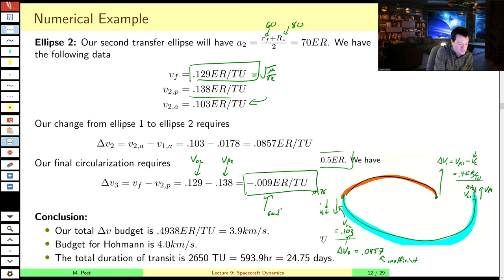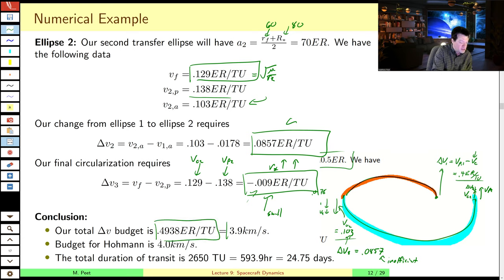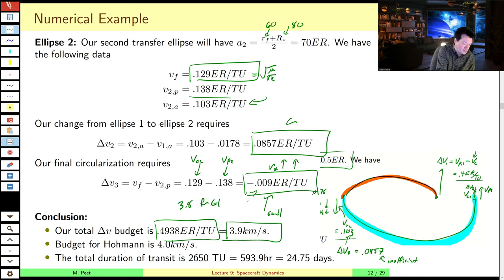Adding the magnitudes of all three delta-Vs: the total delta-V budget is 0.4938 Earth radii per time unit, corresponding to 3.9 km/s. For reference, the delta-V budget to get to GEO is 3.8 km/s. The total delta-V for a Hohmann transfer to this same orbit is 4 km/s. So we've saved about 0.1 km/s — matching what we read off the plot.